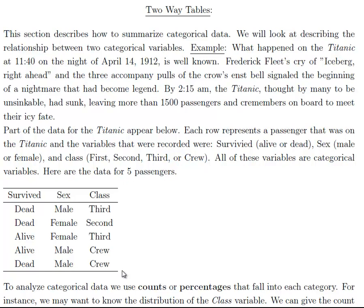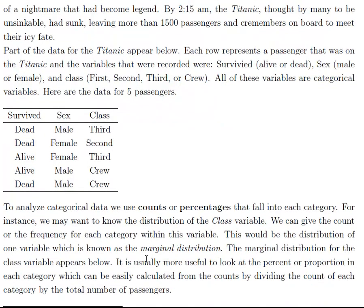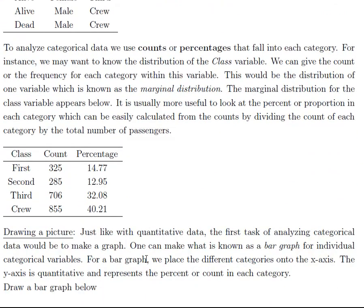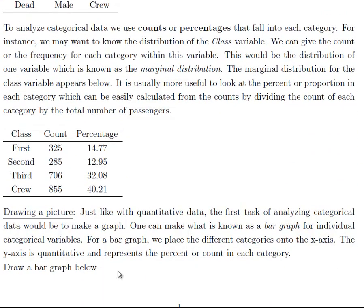Two-way tables are used when we have two categorical variables, and we generally summarize categorical variables by looking at counts or percentages that fall into each category. We're going to first talk about the marginal distribution. When I say distribution of a categorical variable, it means the percent that falls into individual categories. The marginal distribution means just one of the variables — we're not going to consider more than one variable when looking at the marginal distribution.